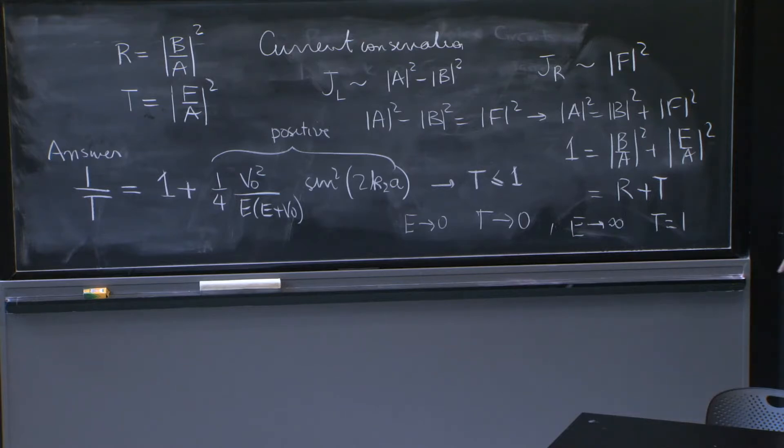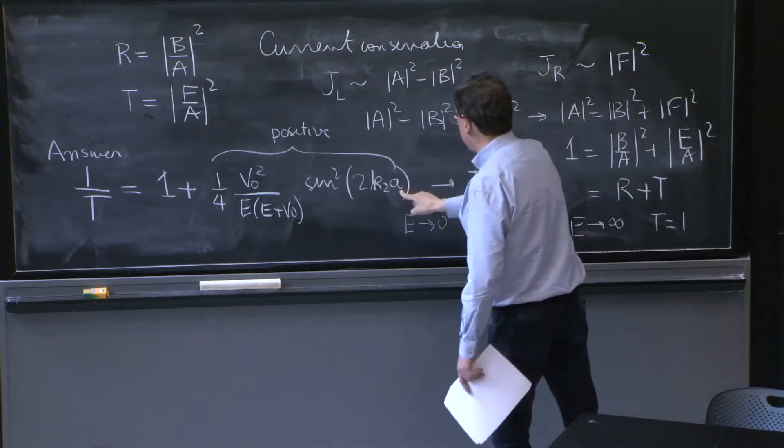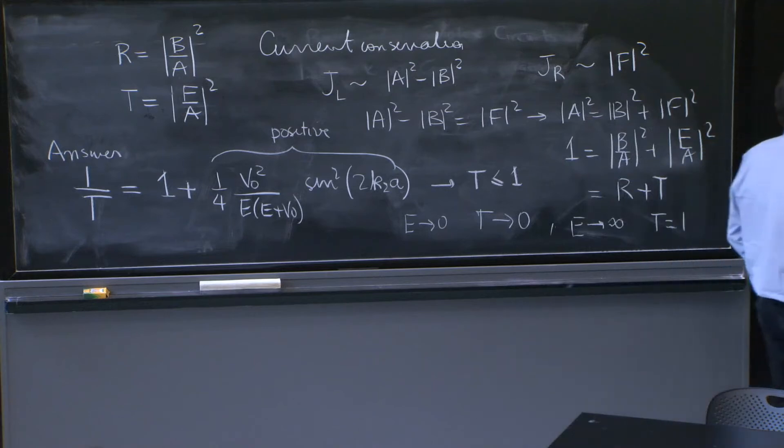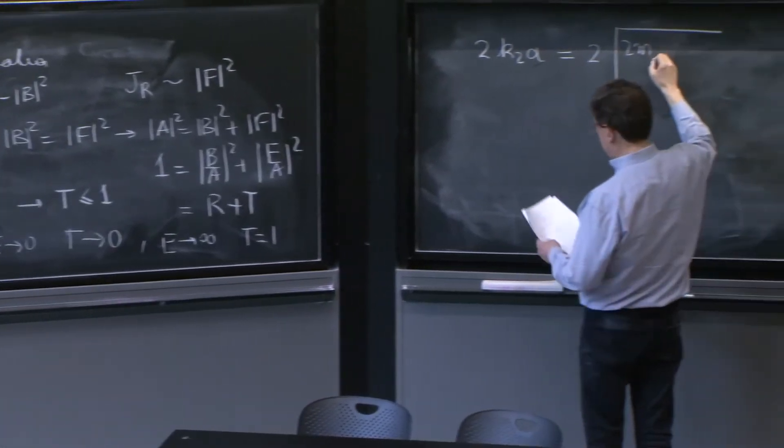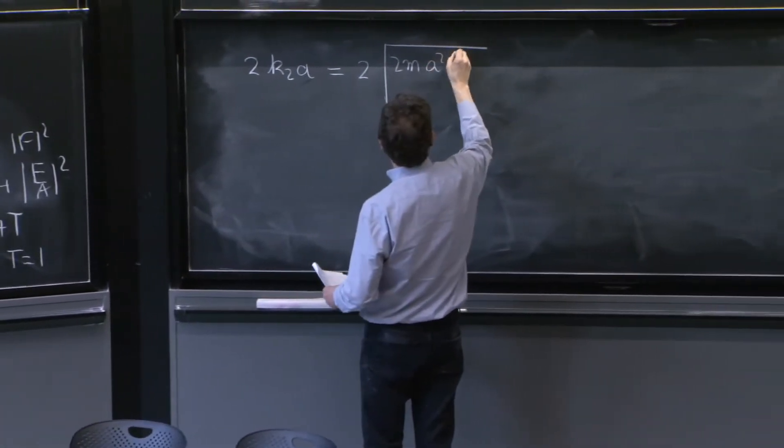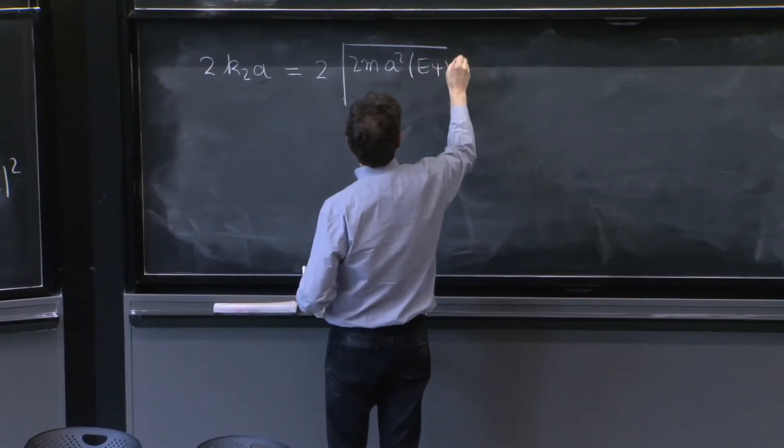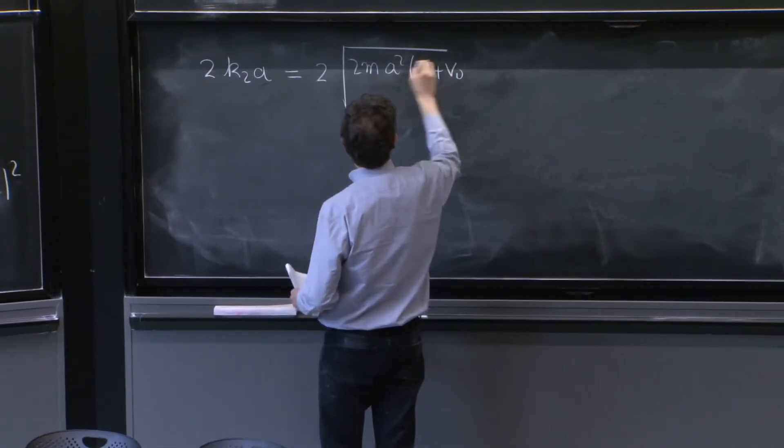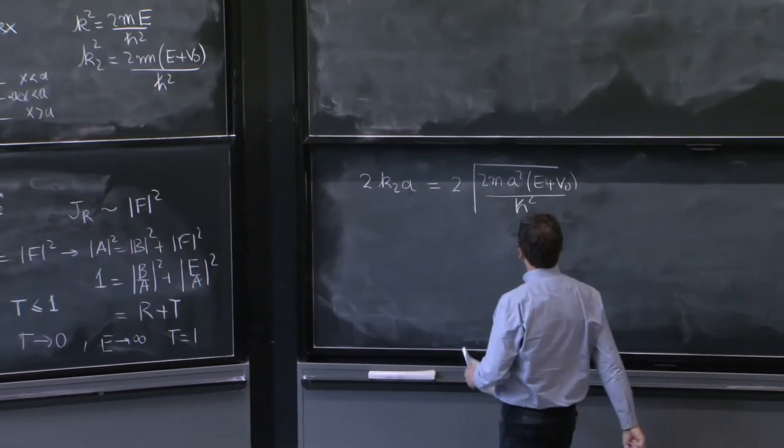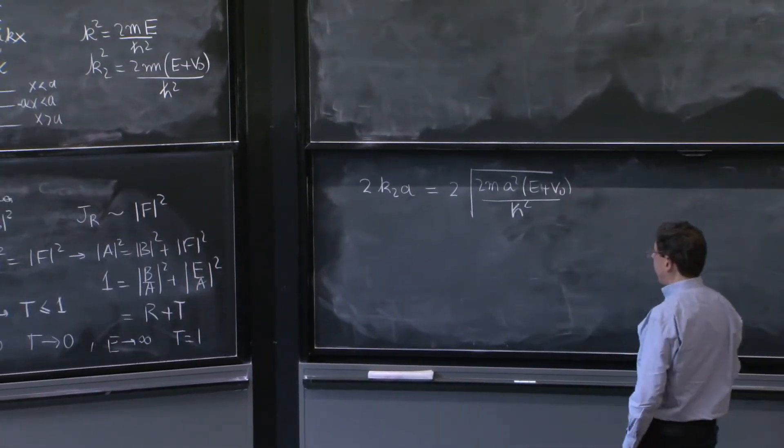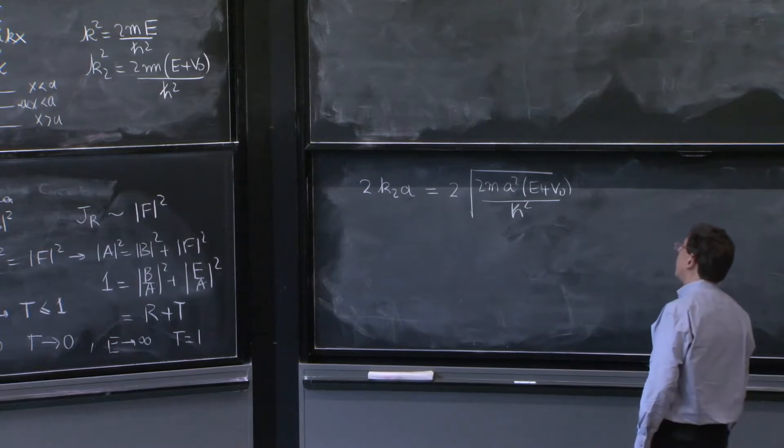So think of 2k2 times a, this factor as the argument of the sine function. Well, it's 2. k2 was defined up there. So it's 2m a squared e plus v0 over h squared. And I put the a inside the square root.